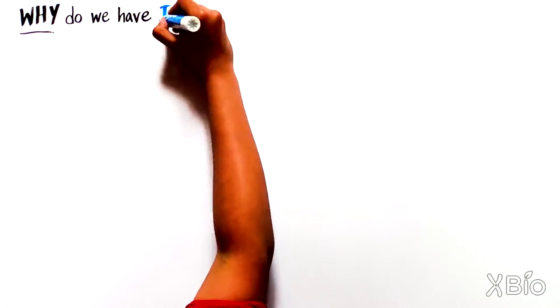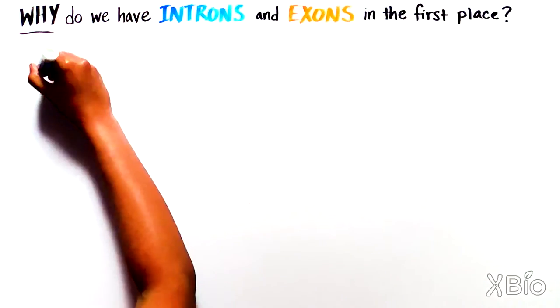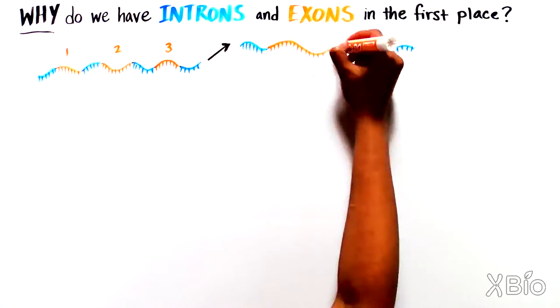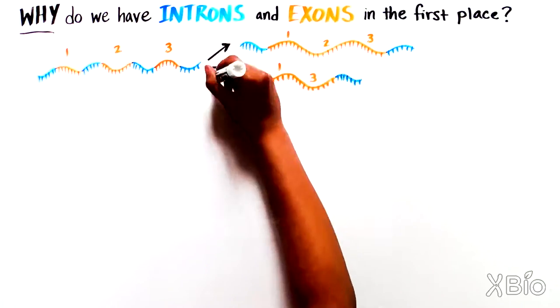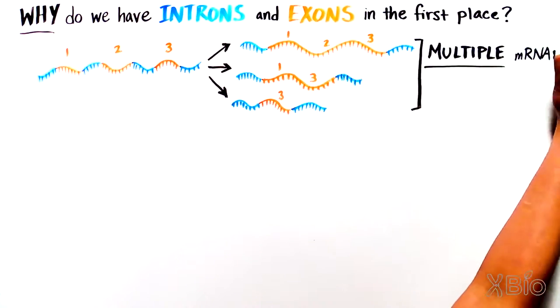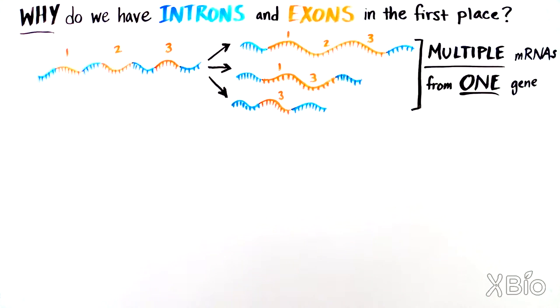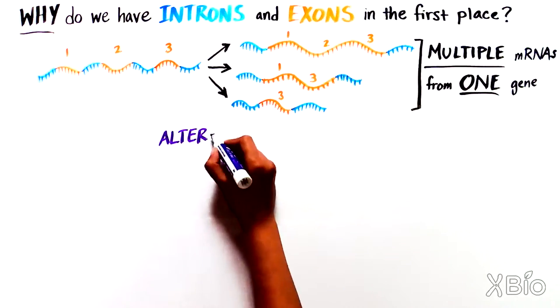Now that we know how splicing works, let's talk about why we even have introns and exons in the first place. One amazing feature of splicing is that cells can make multiple kinds of mRNA products from one gene, by including or excluding particular exons. This is called alternative splicing.